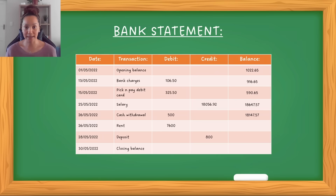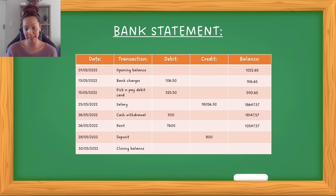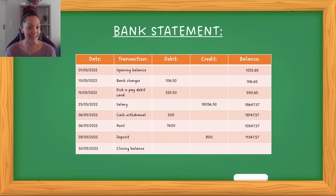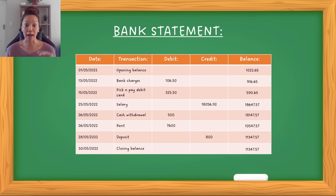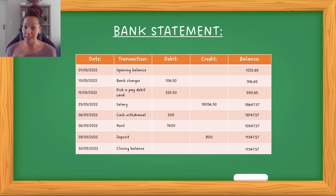Again, my balance subtracts R500 and it gives R18,147.57. Then rent is paid — again debit, it leaves the account, leaving R10,547.57. Then let's say you sell something on Gumtree or Facebook Marketplace, and that person sends money to your account — you credit the account because this is money coming in, and your account increases. So if these are all the transactions that took place in the fifth month, the closing balance — what you have at the end — is R11,347.57. This then becomes the opening balance for June, the sixth month.